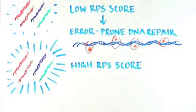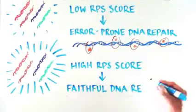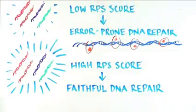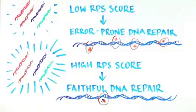Whereas a high RPS score meant that the cells were using a faithful DNA repair mechanism that doesn't introduce errors, and were accumulating fewer mutations.